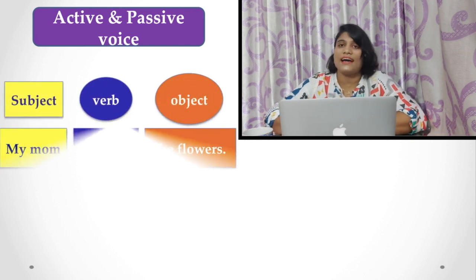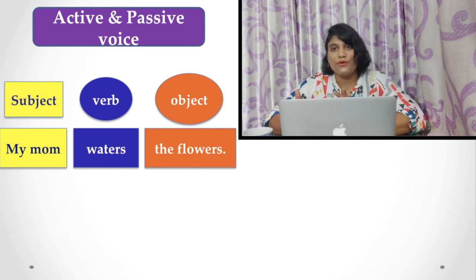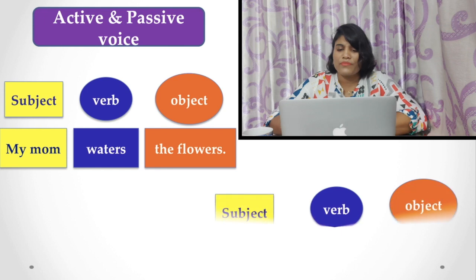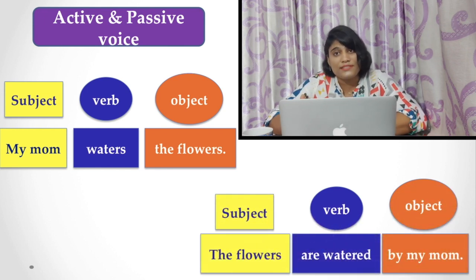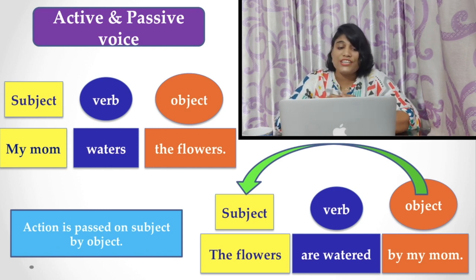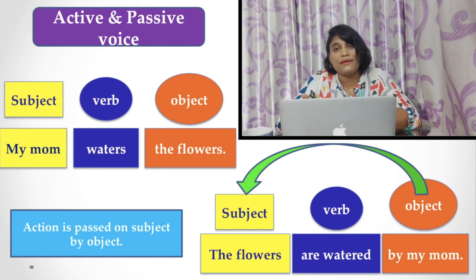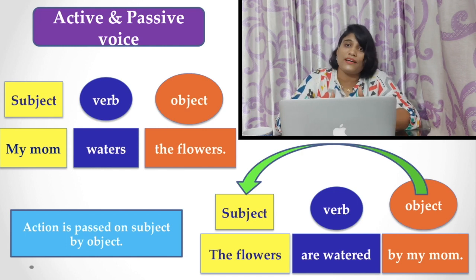Now let's see the active and passive voice together. My mom waters the flowers. Here the subject is my mom, verb is waters, and the object is the flowers. The passive construction is: the flowers are watered by my mom. What happened here? The action is passed on — the subject in the active voice becomes the object in the passive voice, and the object becomes the subject.